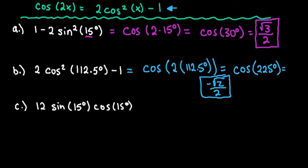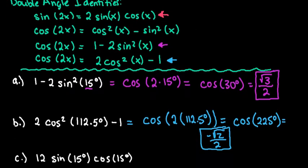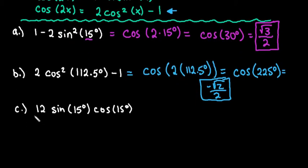Our last one, we have to do a little work on this one. We are using the first double angle identity, the 2 sine x cosine x. And the thing is, we don't have it written as 2 times sine x cosine x. This is really 12 times sine x cosine x. So we have to simplify it and rewrite it as 6 times 2 sine of 15, cosine 15.